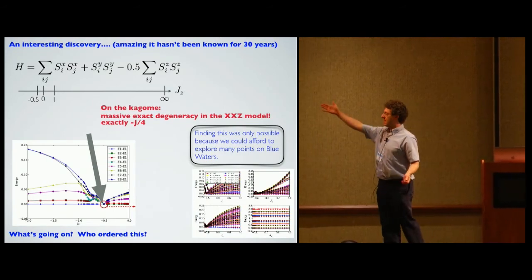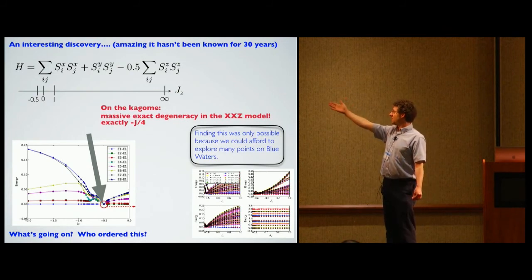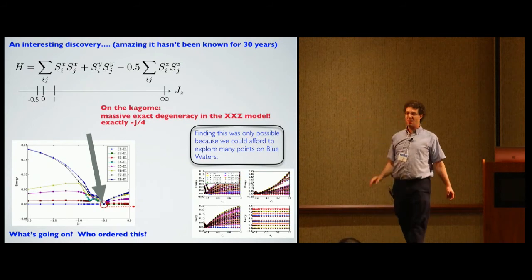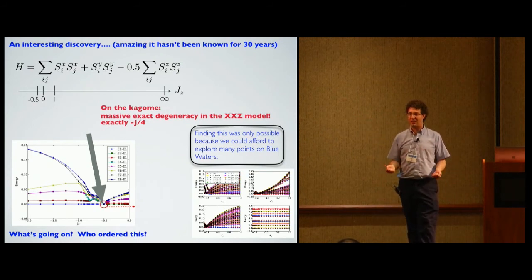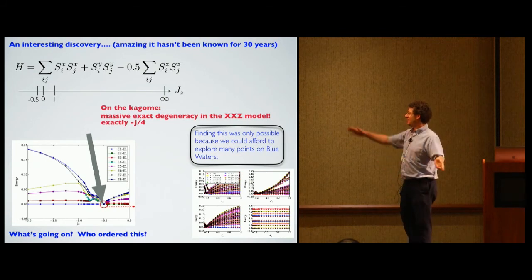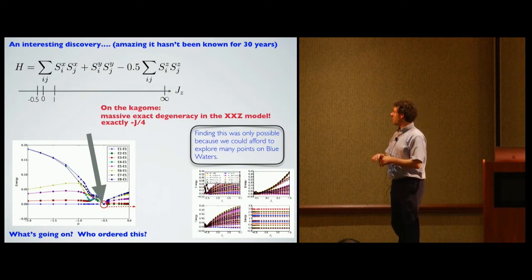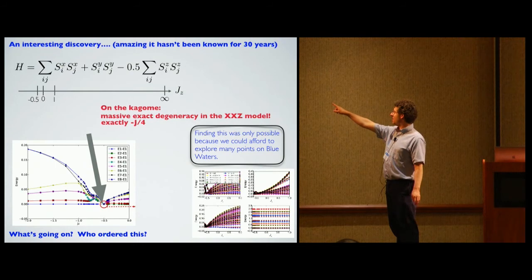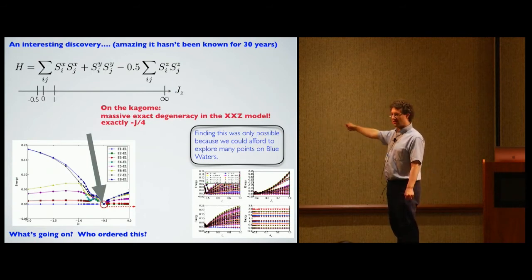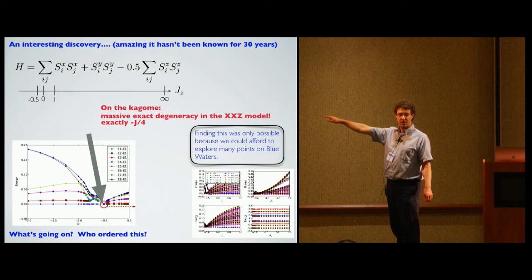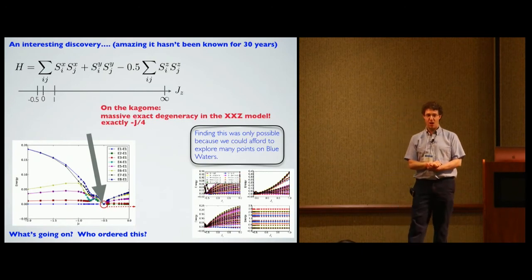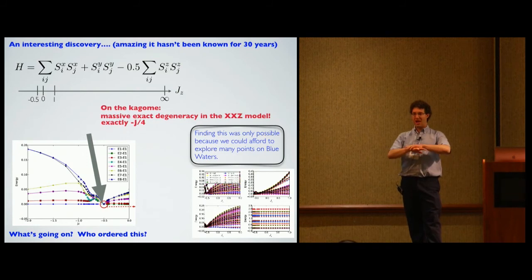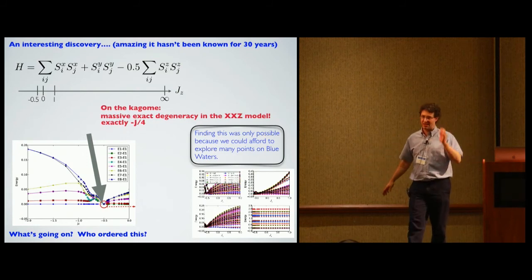Here is the Hamiltonian — the specific matrix. In this notation it's XX + YY minus one-half ZZ. It's like the Heisenberg model except the ZZ term is different. If you take this Hamiltonian on the Kagome lattice, there's a massive exact degeneracy. In these graphs we're tuning a parameter Jz and doing lots of exact diagonalization calculations. What you see is that the ground state, the first excited state, the next energy level — they all collapse at one point. Looking at different sectors with different numbers of spin-up electrons, many many eigenvectors collapse to the same energy.